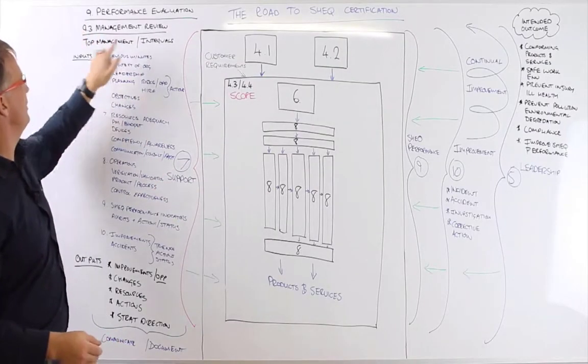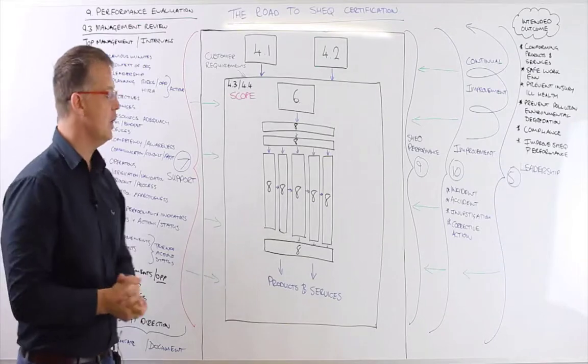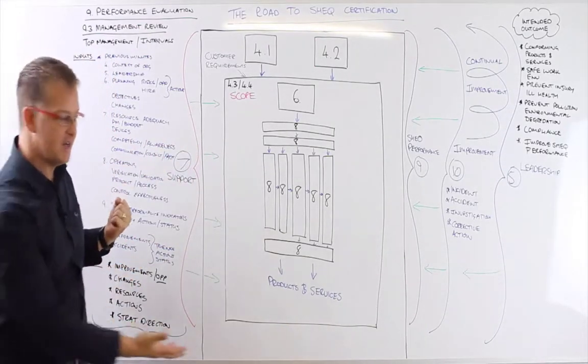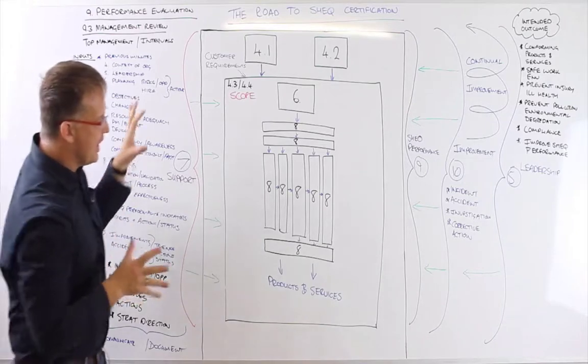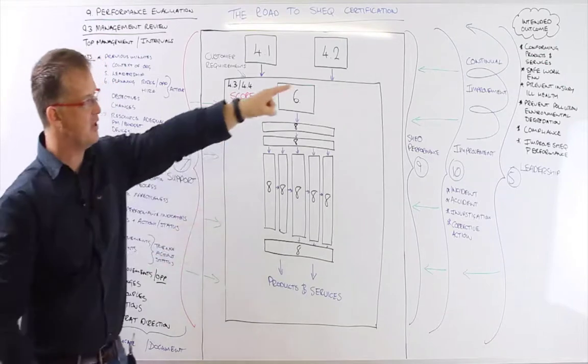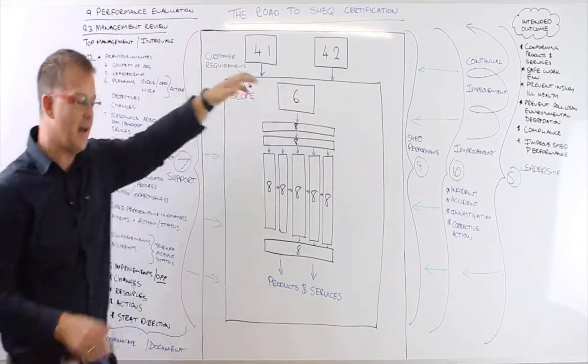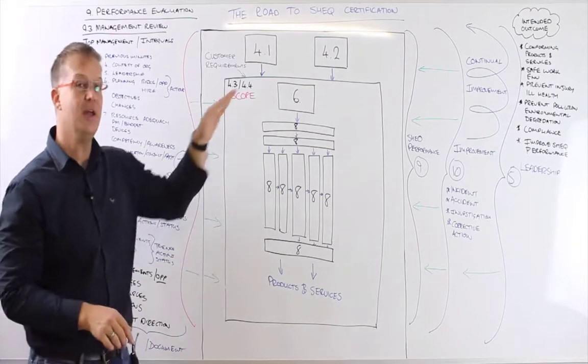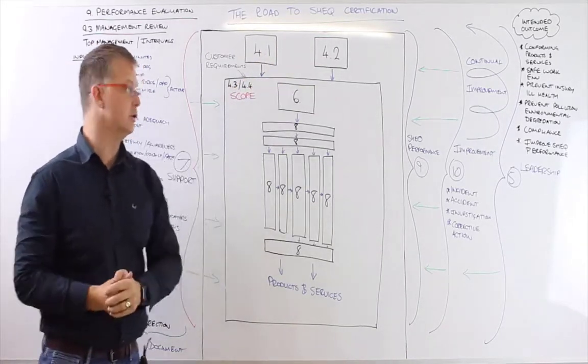Here in 9.3, we're going to have a look at Management Review, which is where management steps back and has a look at the SHE performance indicators and the auditing results and the various different statistics from within the business to assess the effectiveness of the SHE management system in achieving the intended outcomes and making tweaks and changes to the SHE management system in order to ensure our continual improvement.